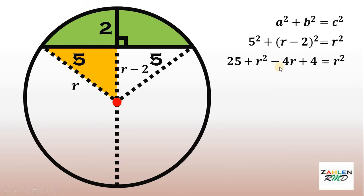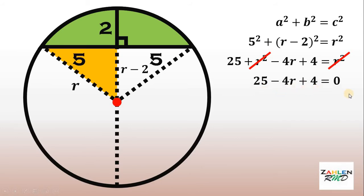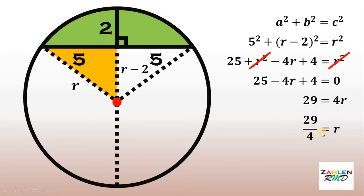Simplify and we get 25 plus r squared minus 4r plus 4 equals r squared. At this point, r squared on both sides cancels out, leaving us 25 minus 4r plus 4 equals 0. Simplify and we get 29 equals 4r. Divide both sides by 4 and we get r equals 29 over 4.